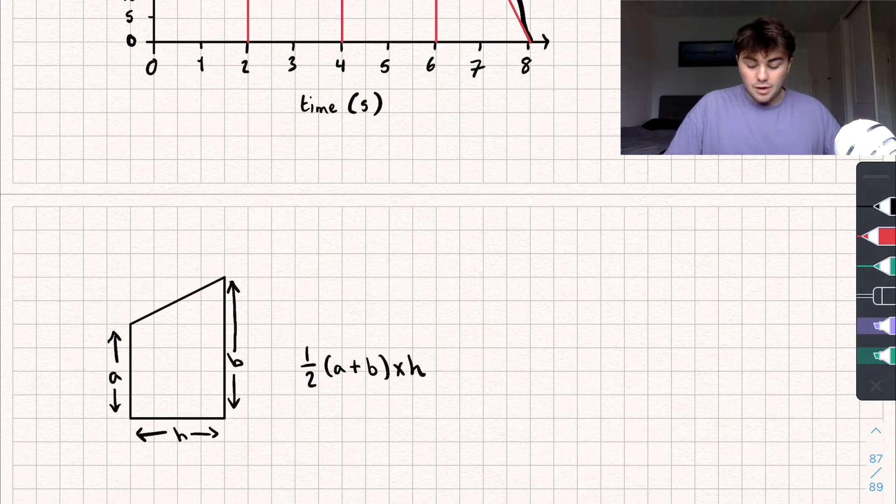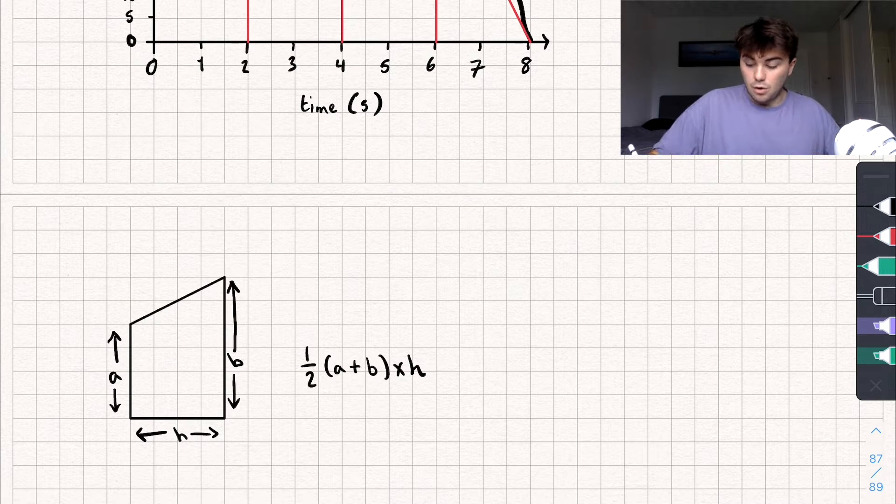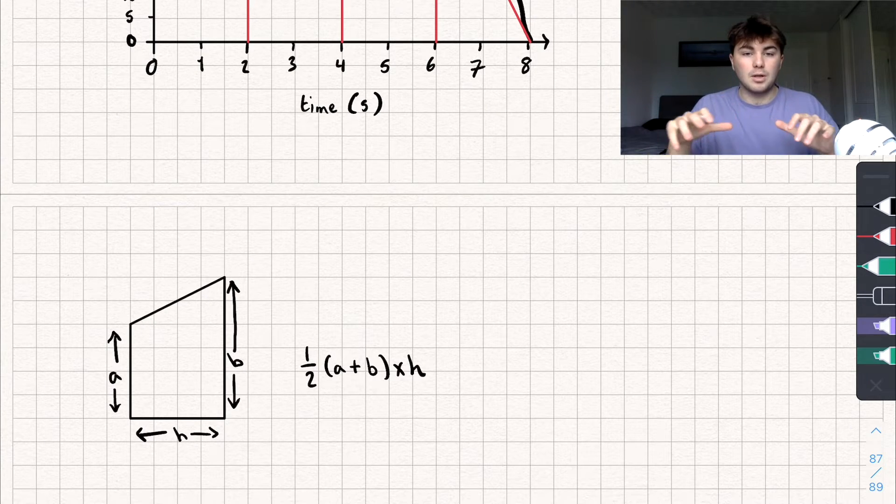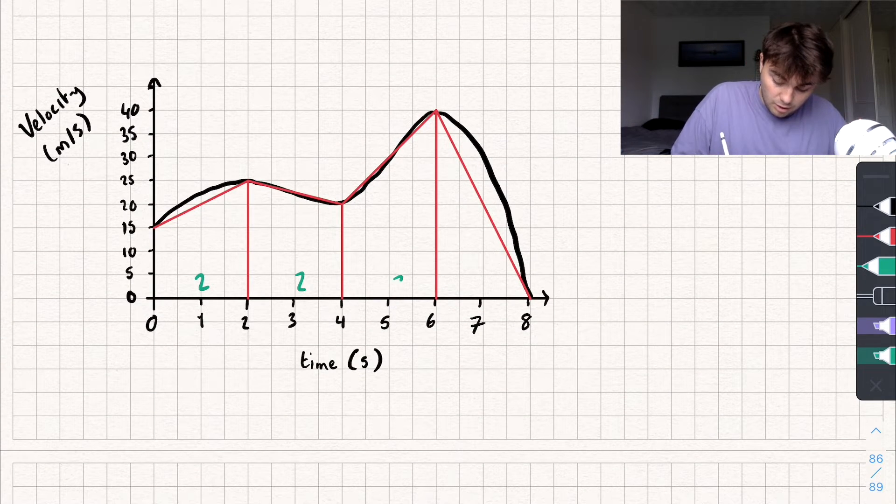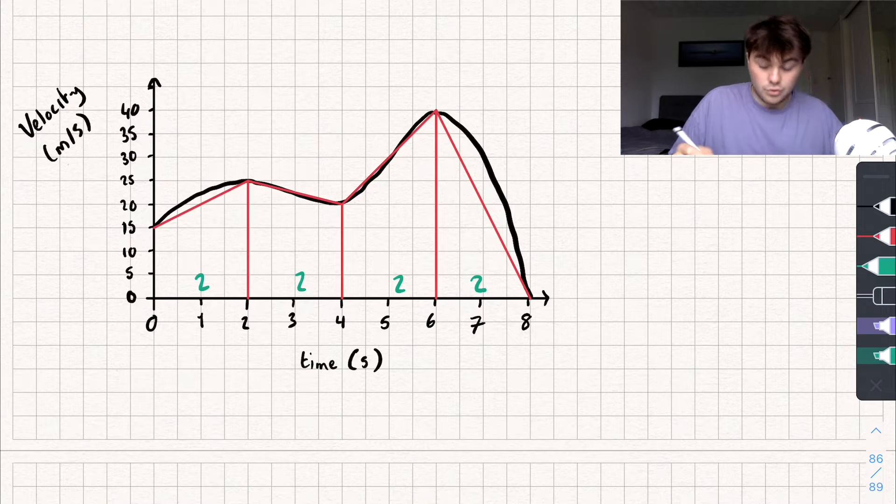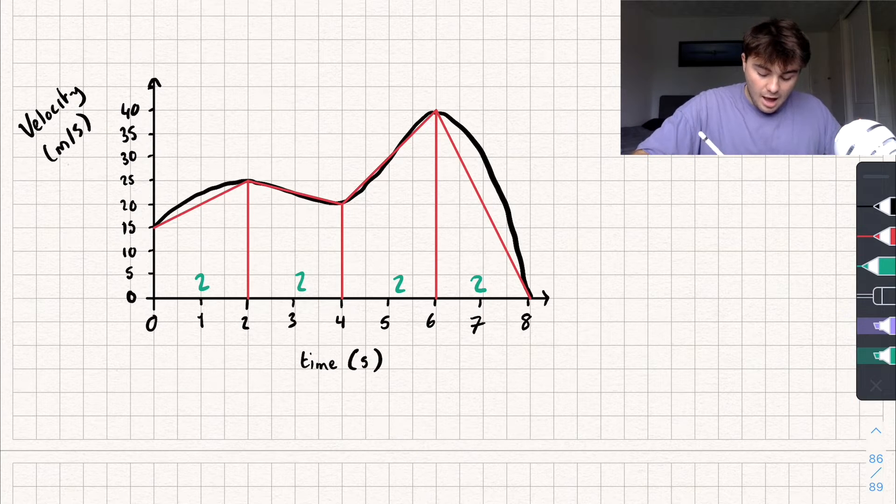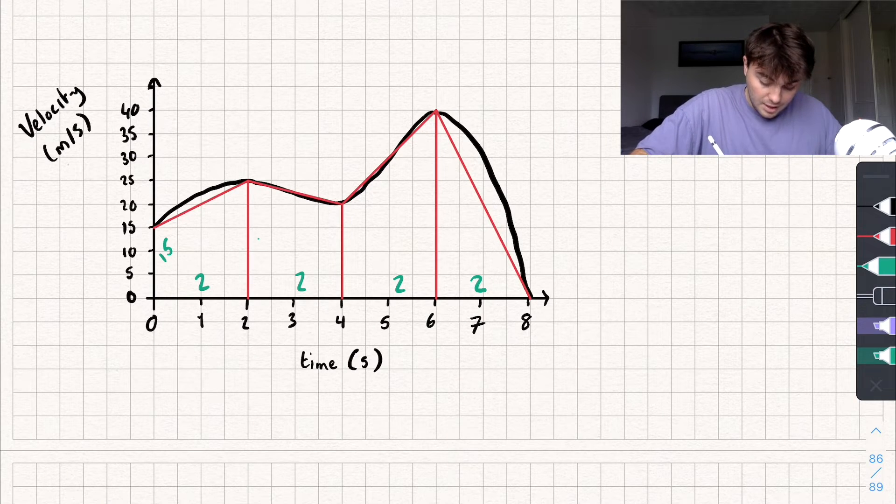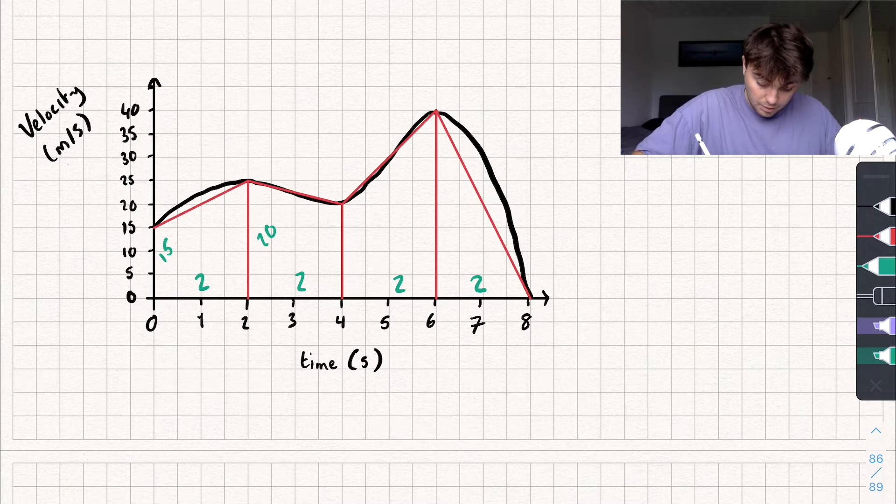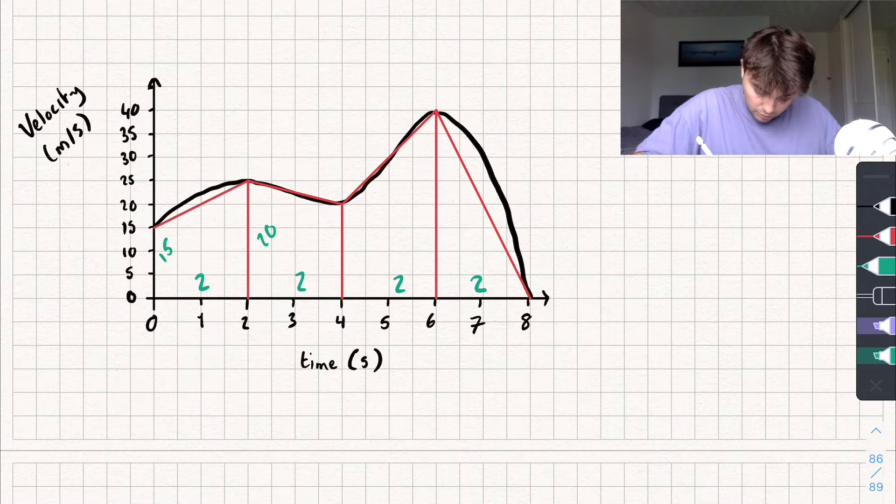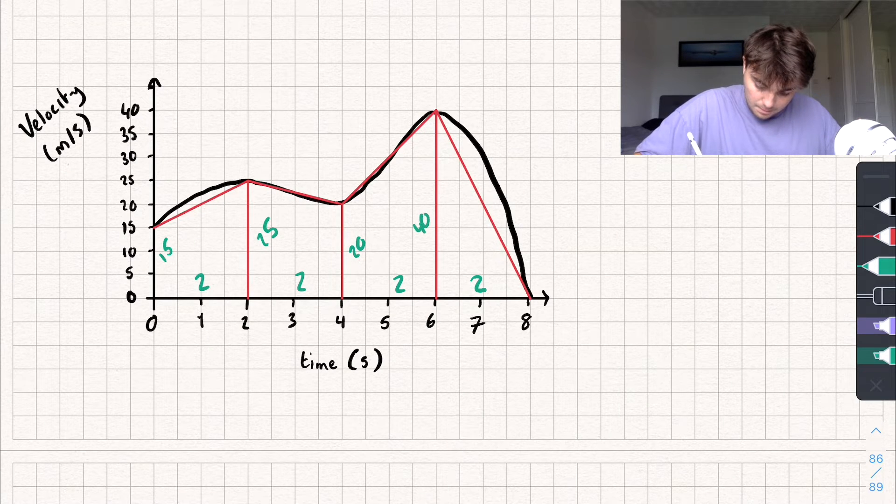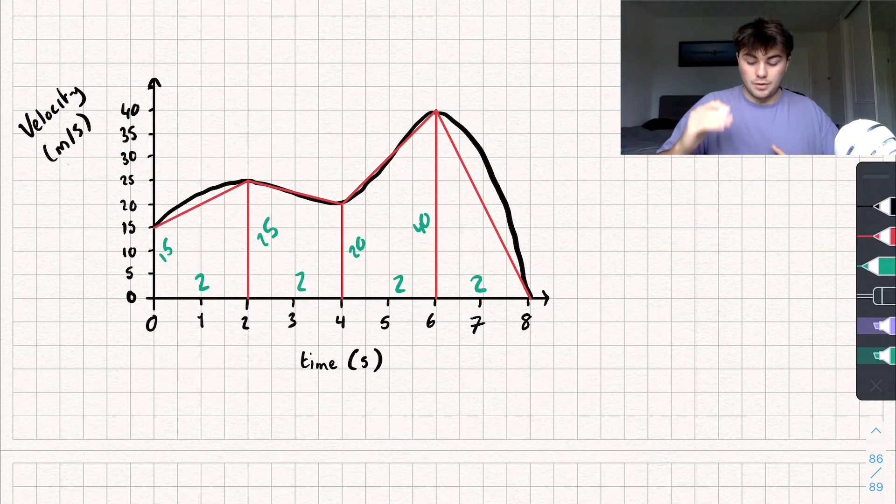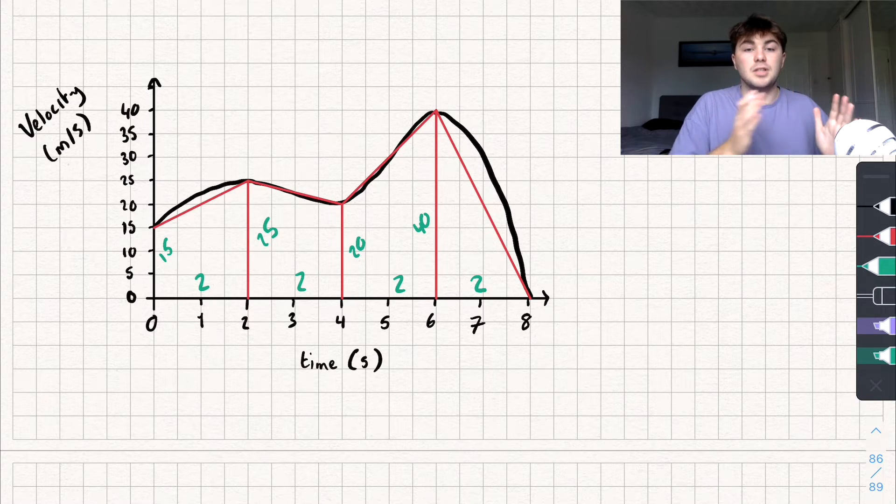So the formula to find the area for trapezium is there, just in case you've forgotten. So it's half a plus b multiplied by the height. So the height of all these trapeziums is going to be two. So let's write that there. And that triangle, the base is two. And then we've got, well, this side here is 15. This is 20. This one here is, oh sorry, this should be 25. This is 20 and this is 40. So I've just put the heights of each trapezium or not the heights, but the lengths of each side.